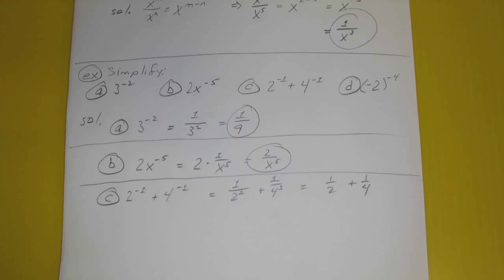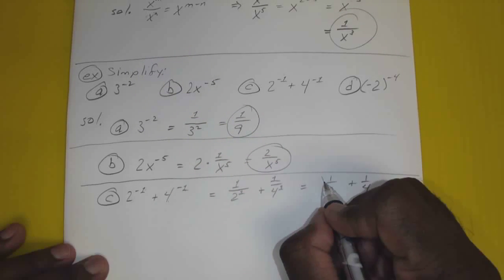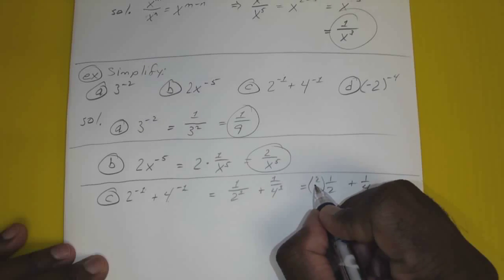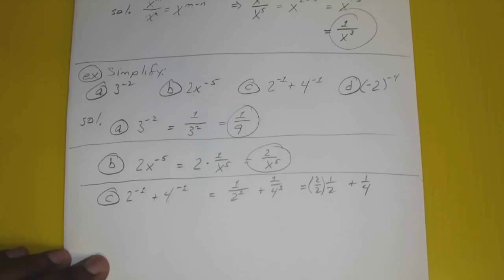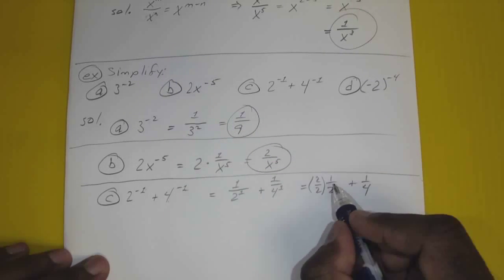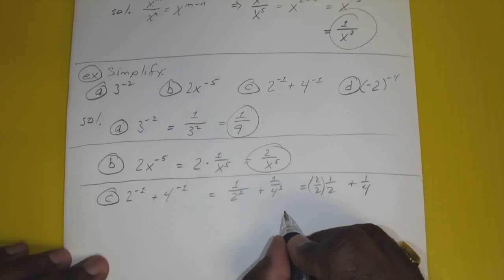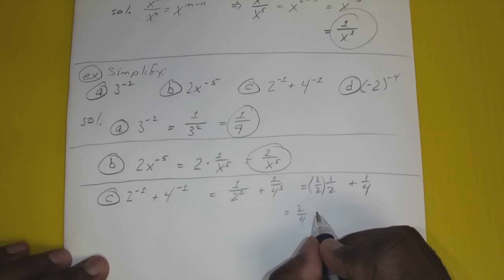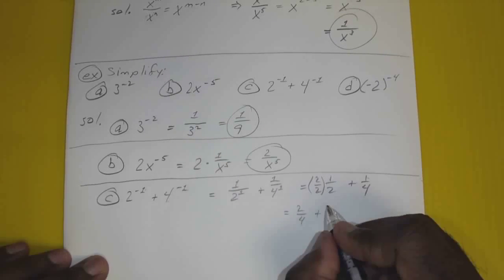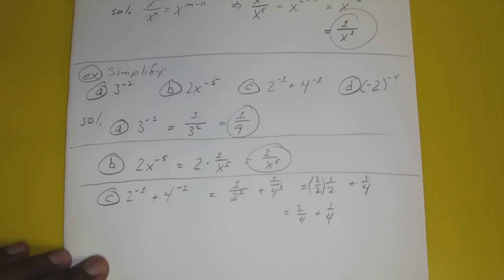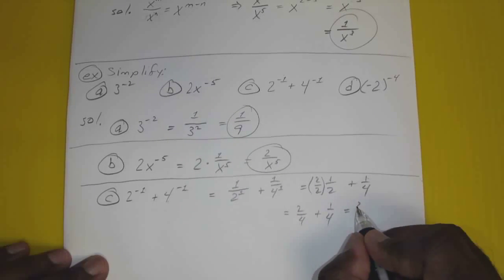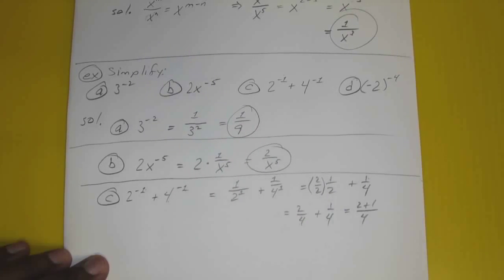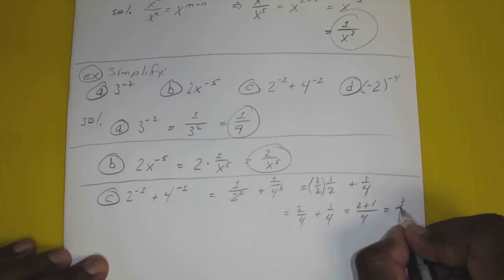We can't add fractions unless they have the same denominator, so multiply 1/2 by 2 over 2. That gives us 2 over 4 plus 1 over 4. Now with the same denominators, we add across: 2 plus 1 over 4, which is 3 over 4.